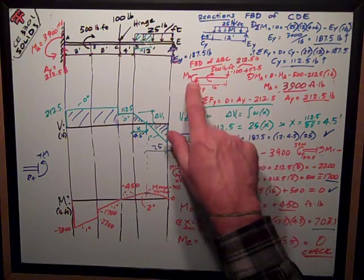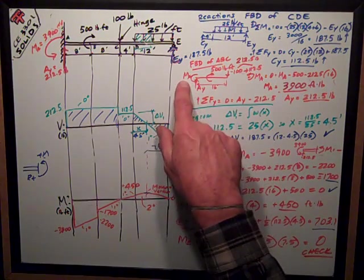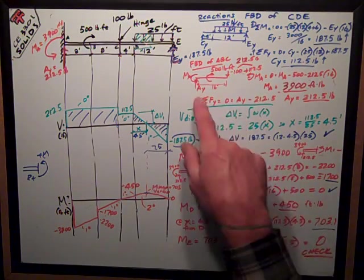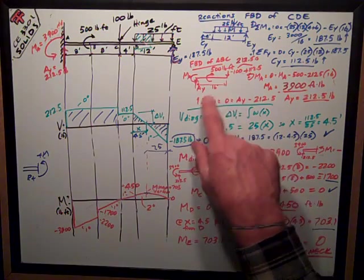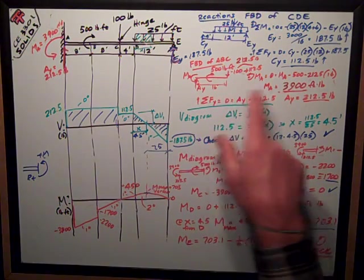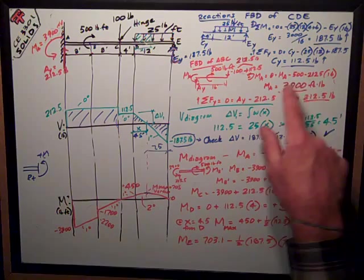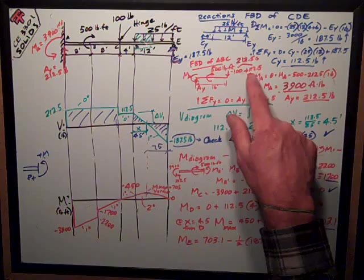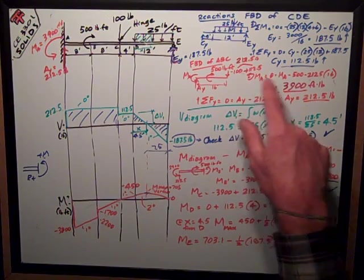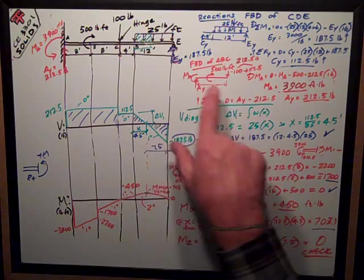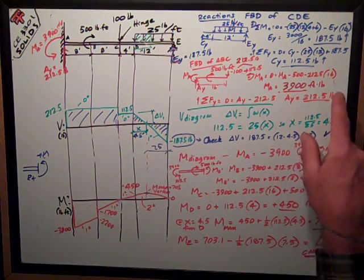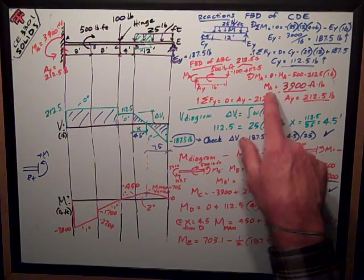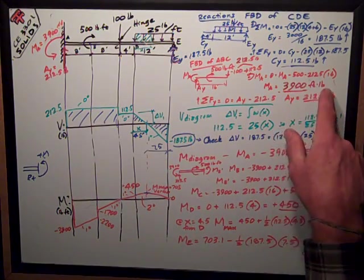Sum of moments about point A is zero. I have the moment at the support minus 500 because it's clockwise, minus 212.5 which is the sum of 100 externally applied plus the internal reaction at the hinge 112.5 times the moment arm of 16 feet. Doing the math, rearranging, I get that the moment at the support is 3900 foot pounds.